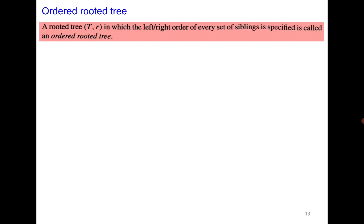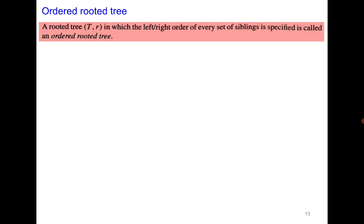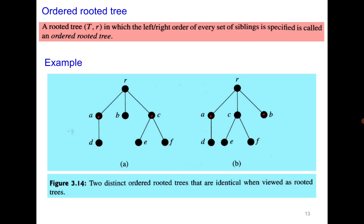Next is the ordered rooted tree. If we fix the left-to-right order of the siblings, then it becomes an ordered rooted tree. Both examples are isomorphic as rooted trees, but in one, r has a as leftmost child and c as rightmost child, while in the other the leftmost is a but rightmost is b. Since the order has changed, they are non-isomorphic as ordered rooted trees.